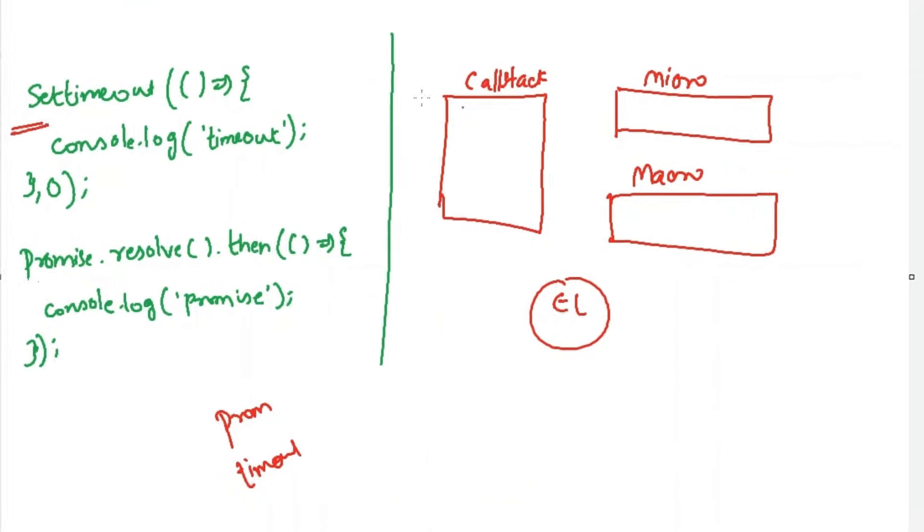Whenever JavaScript executes this particular code, it will see this setTimeout and push this into the macro task queue. Now do you see this promise? Whenever JavaScript engine sees this, it will push this into the micro task queue.